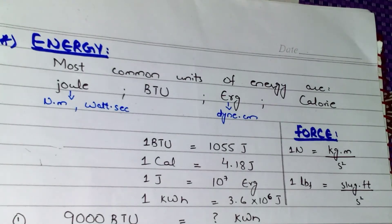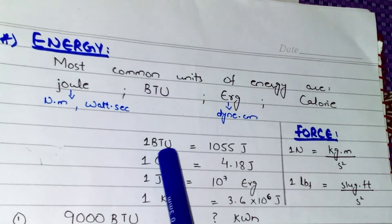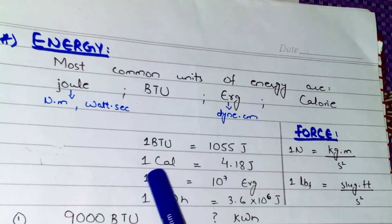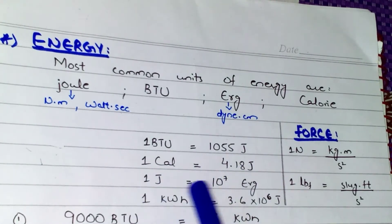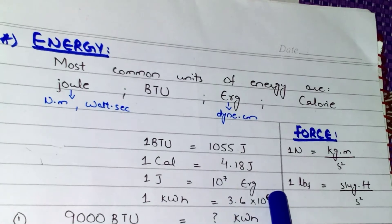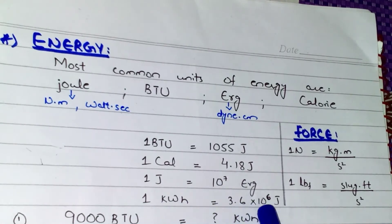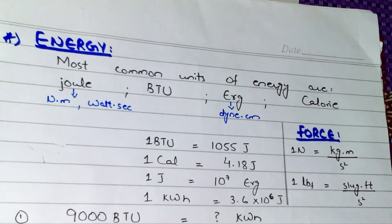The most important conversions we need to remember while doing energy conversions are: one BTU equals 1055 joules; one calorie equals 4.18 joules; one joule equals 10 to the power 7 ergs; and one kilowatt-hour equals 3.6 × 10⁶ joules. We will discuss the kilowatt-hour conversion later when we do its question.